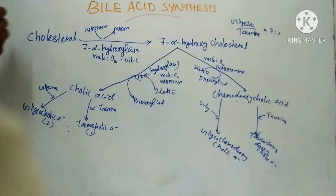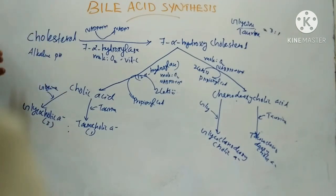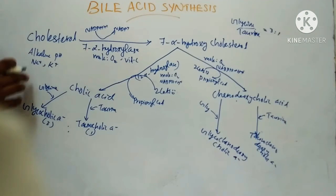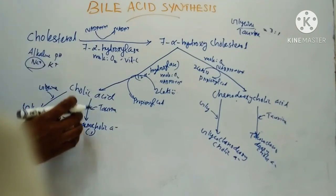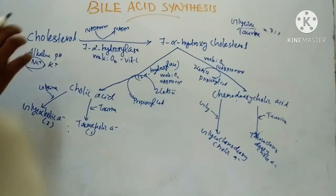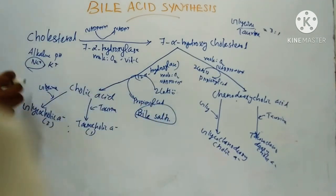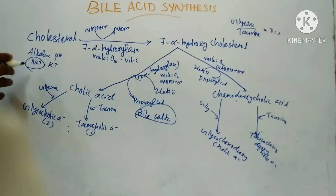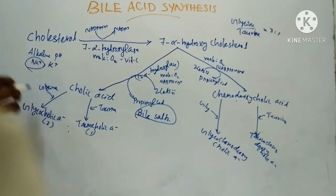Usually the bile has alkaline pH and contains sodium and potassium. Bile acids exist in bile as sodium salts — as sodium glycocholate and sodium taurocholate. These are called bile salts.